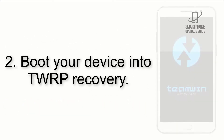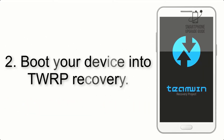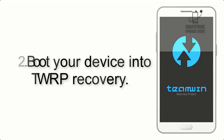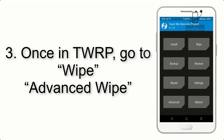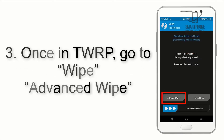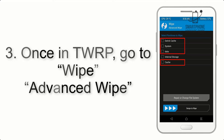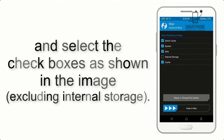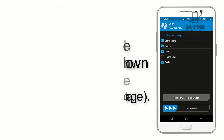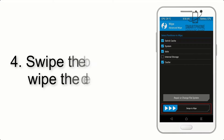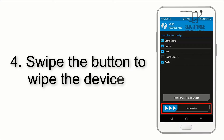Step 2: Boot your device into TWRP recovery. Once in TWRP, click on Wipe, then Advanced Wipe, and select the checkboxes as shown in the image, excluding internal storage.